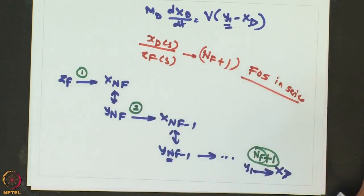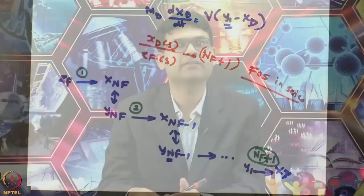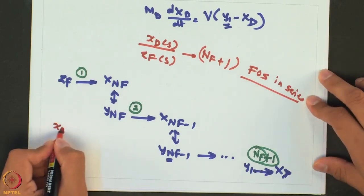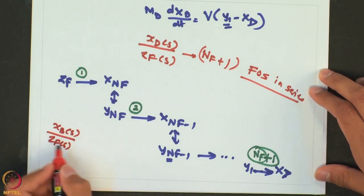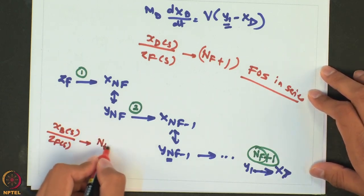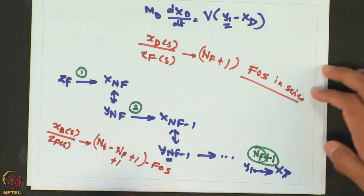The order of this response is given by how many trays are in the rectification section: nf trays plus one from the reflux drum, giving nf+1 total first order processes in series. Similarly, for the stripping section, the bottom purity response to feed composition change will be of order equal to the stages in the stripping section — which is (nt − nf + 1) plus the reboiler. The whole purpose of this example was to show that such higher order systems are quite common in the chemical industry.